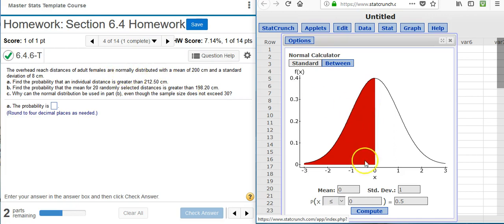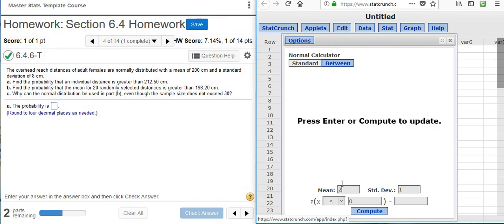Note that in the normal calculator, the mean and standard deviation values, by default, come up for the standard normal distribution. The problem statement gives us a non-standard normal distribution. But this is very easily corrected. I just adjust the mean and the standard deviation for the values that are listed in the problem statement.